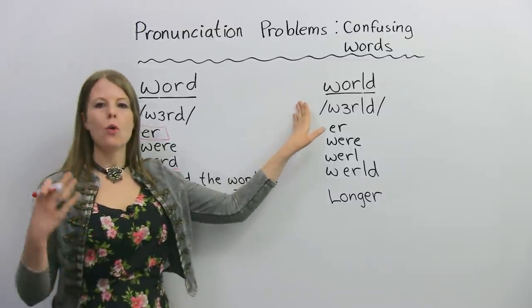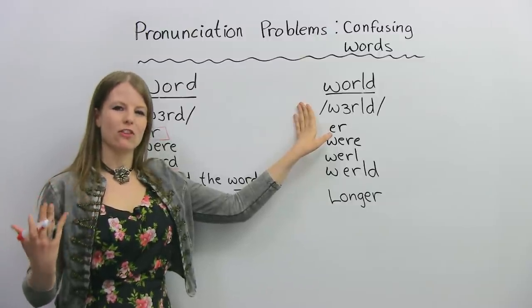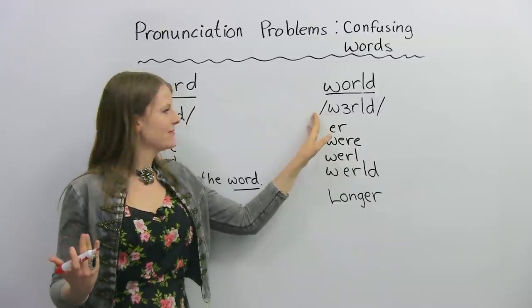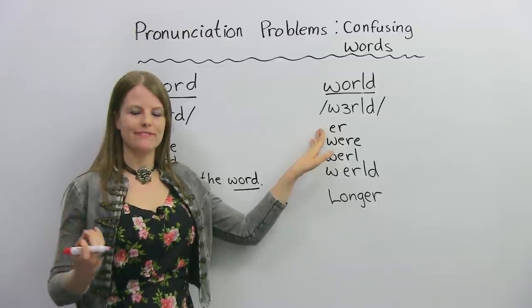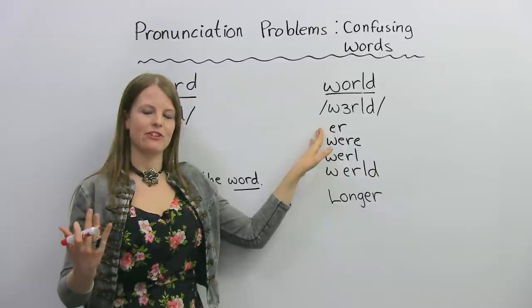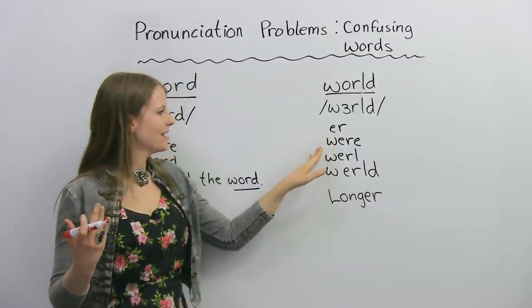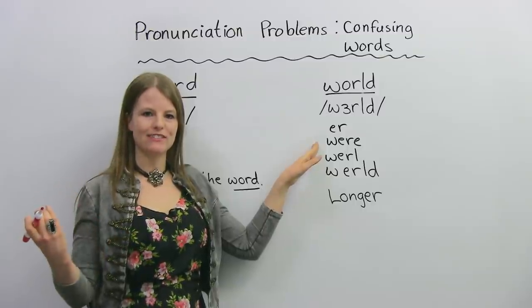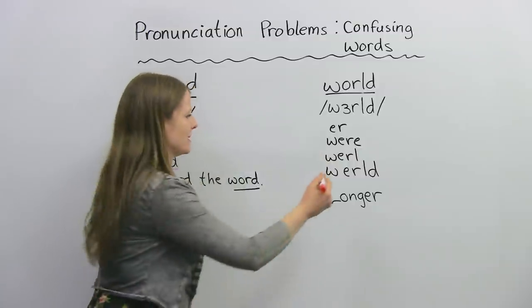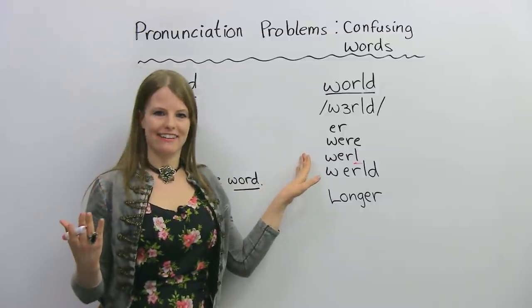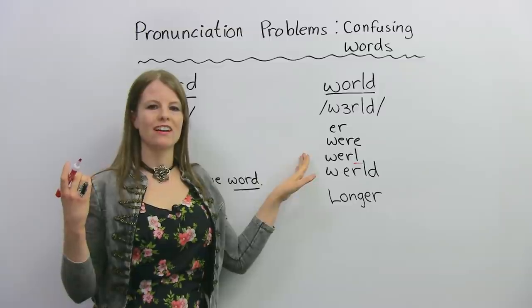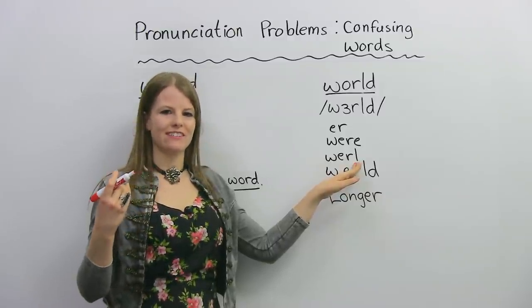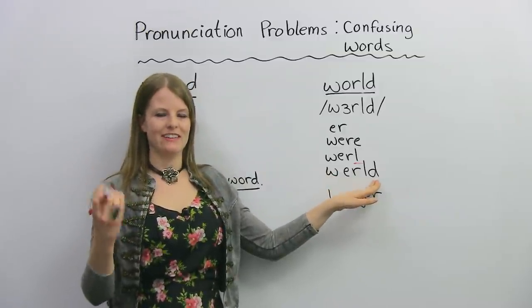Now I want you to compare that to this sound: world. This sound is a little bit longer. Both words have the same vowel sound — ER. So start with 'were', then here's where it gets a bit tricky because of the L. I want you to add an L to this sound: whirl. At the very end, your tongue, when you make the L, should be touching the roof of your mouth. Whirl. Now we're going to add the D: world.